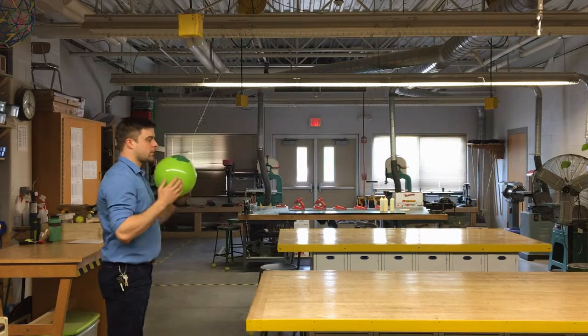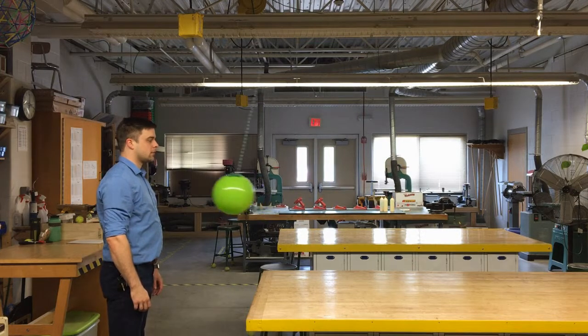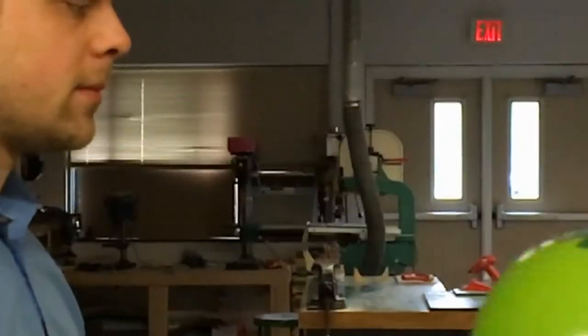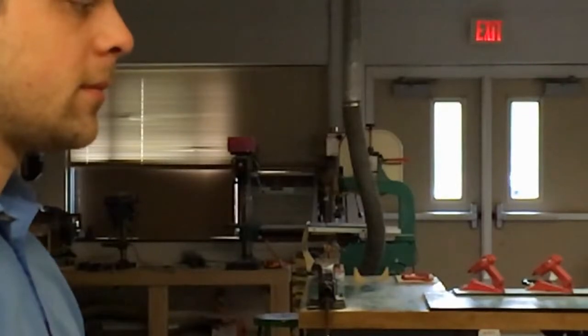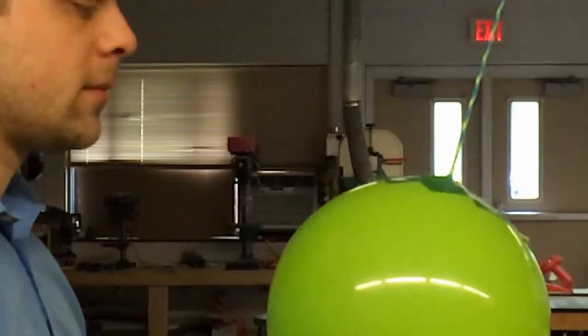If I try the same experiment with the much lighter green ball, the same outside forces act to slow the ball down. But because this ball has much less inertia, the outside forces have a much greater effect on it, and it slows the ball down much more quickly.